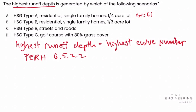Answer choice B has HSG type B soil, residential single family homes on third-acre lots, and the curve number for that is 72. Answer choice C is HSG type B soil with streets and roads — that has a curve number of 98. These curve numbers come from the table in section 6.5.2.2 of the PE reference handbook. Answer choice D is HSG type C soil on a golf course with 80% grass cover — that curve number equals 74.